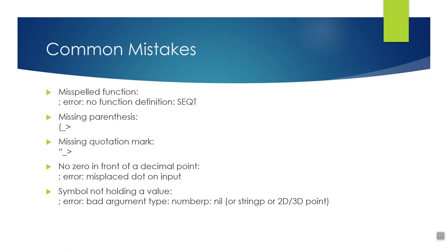If you have a symbol not holding a value — for example, you used setQ with variables A, B, C, but for some reason one of those variables isn't holding a value — it's going to give you an error like 'bad argument type'.